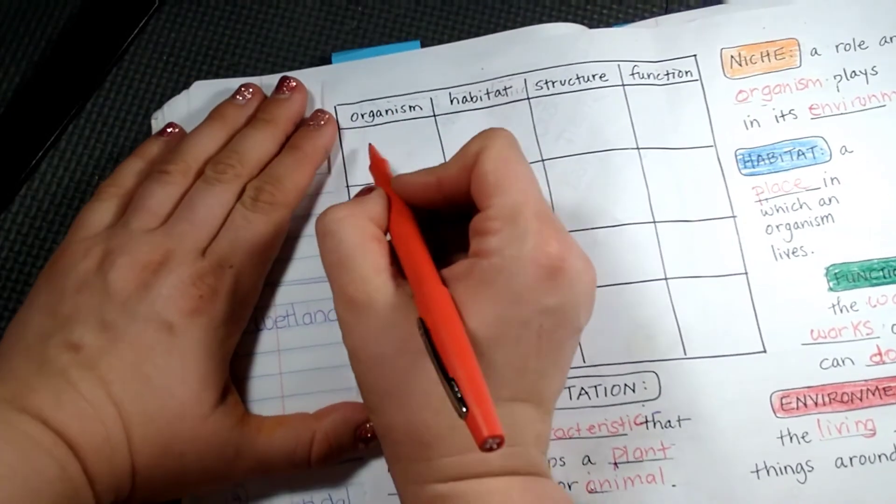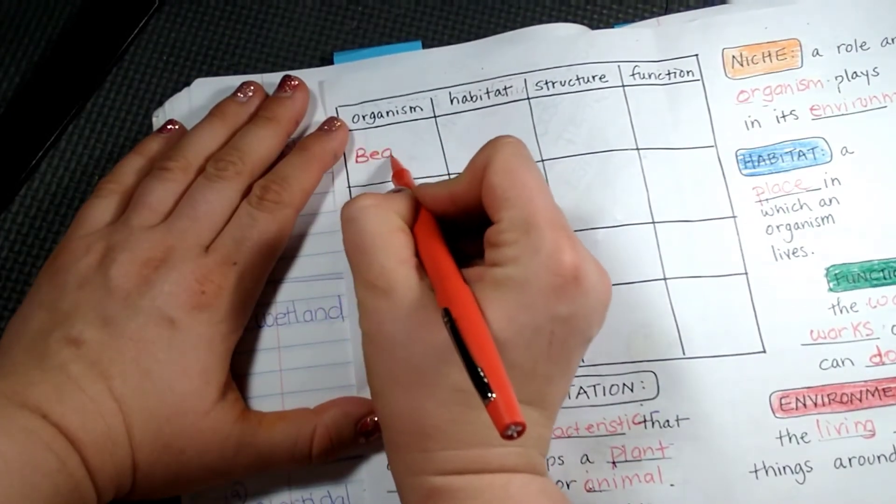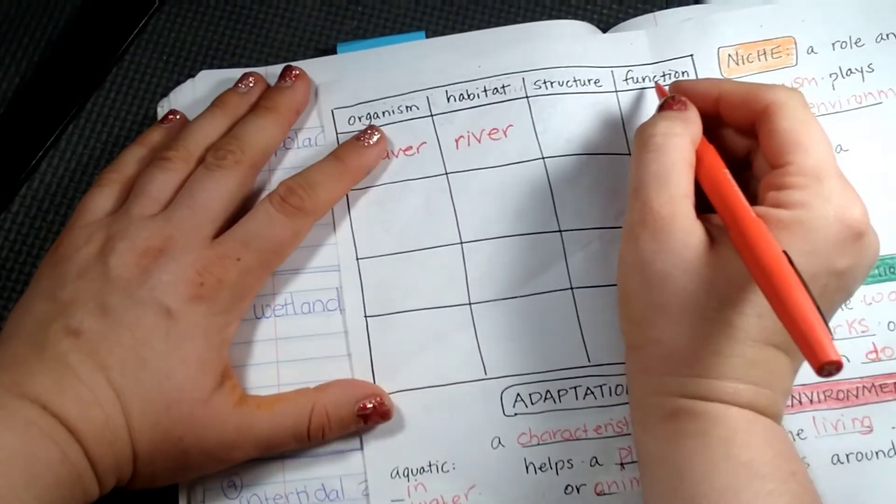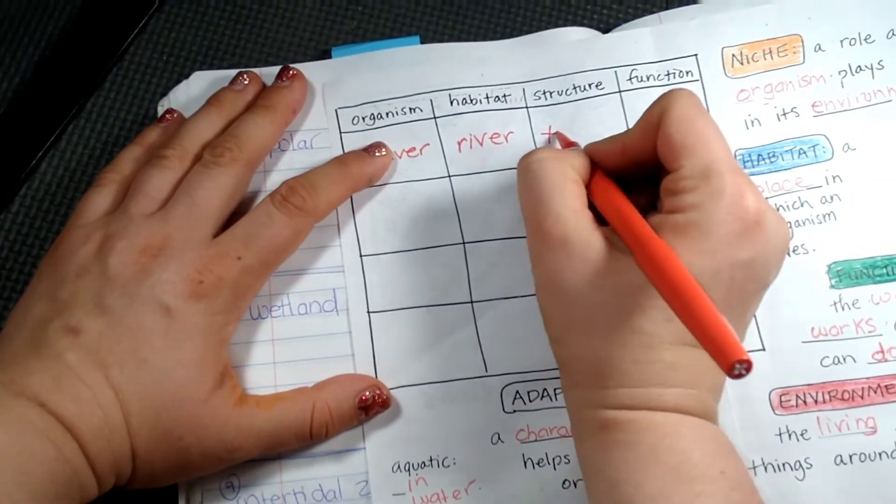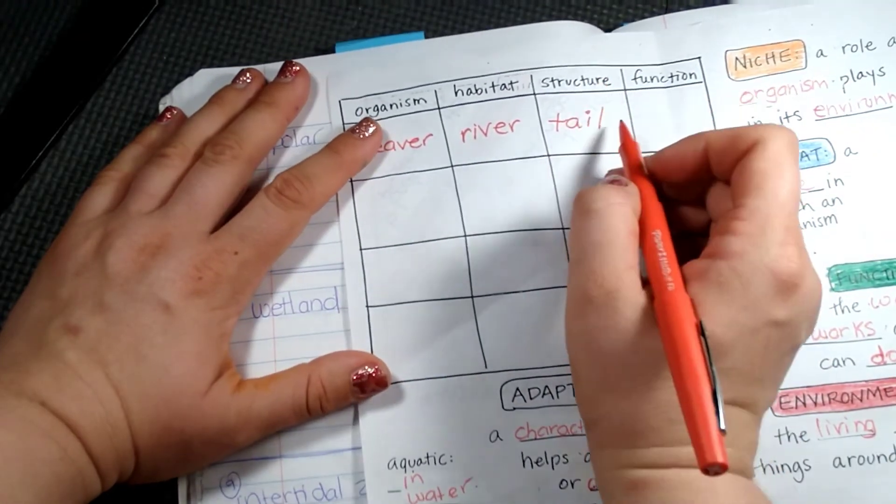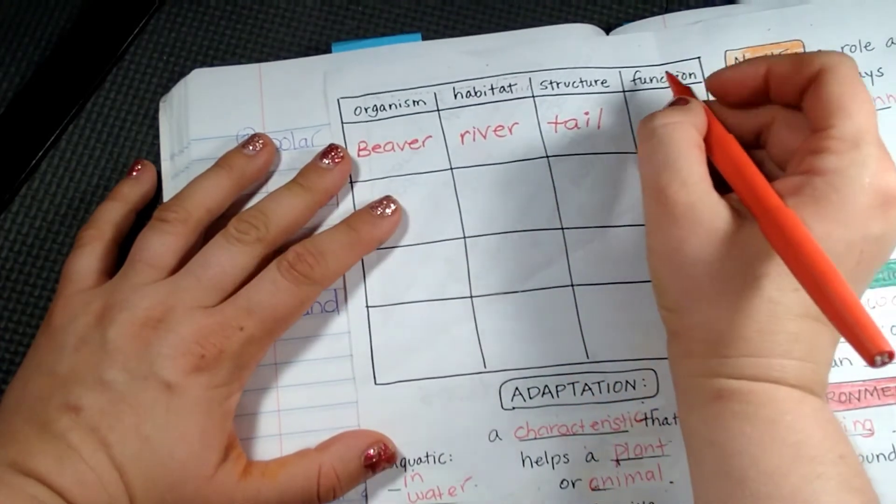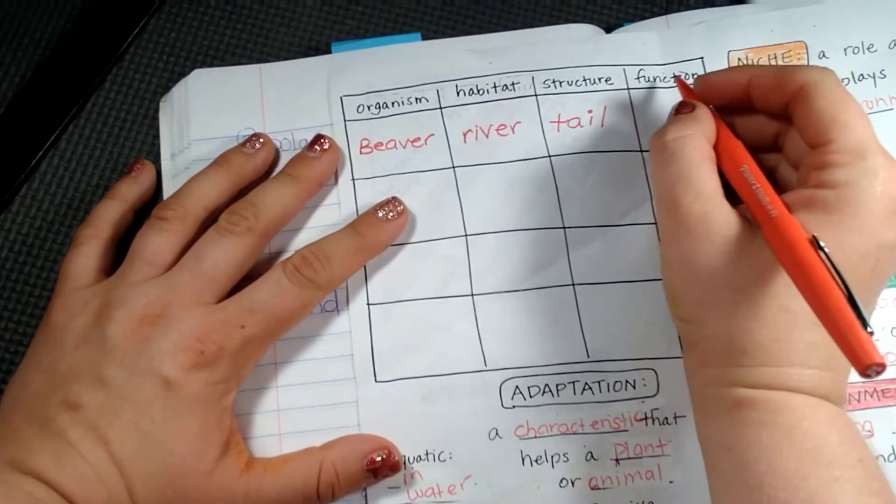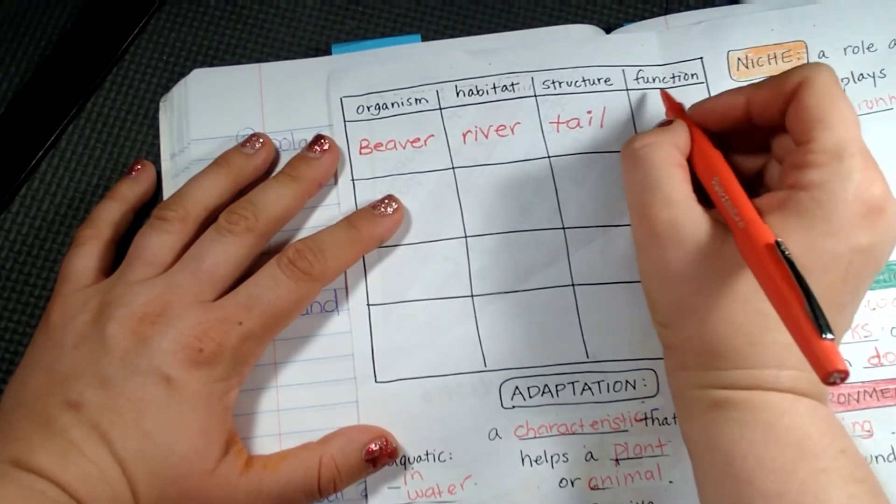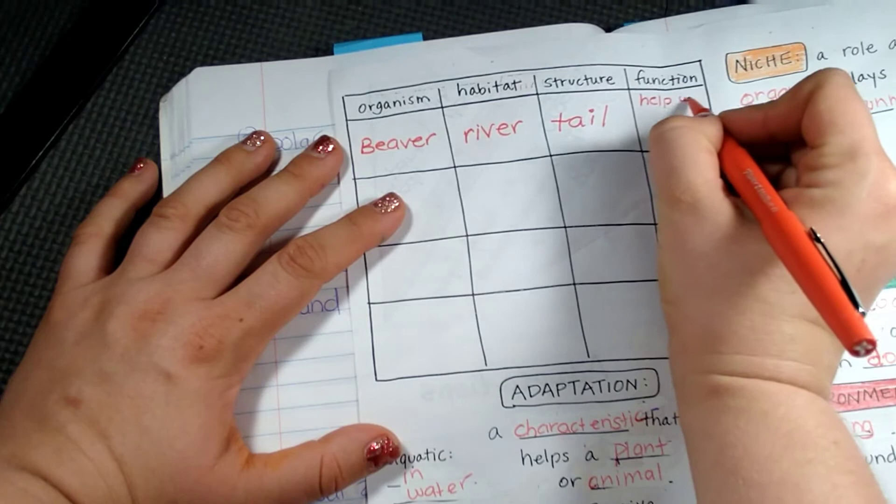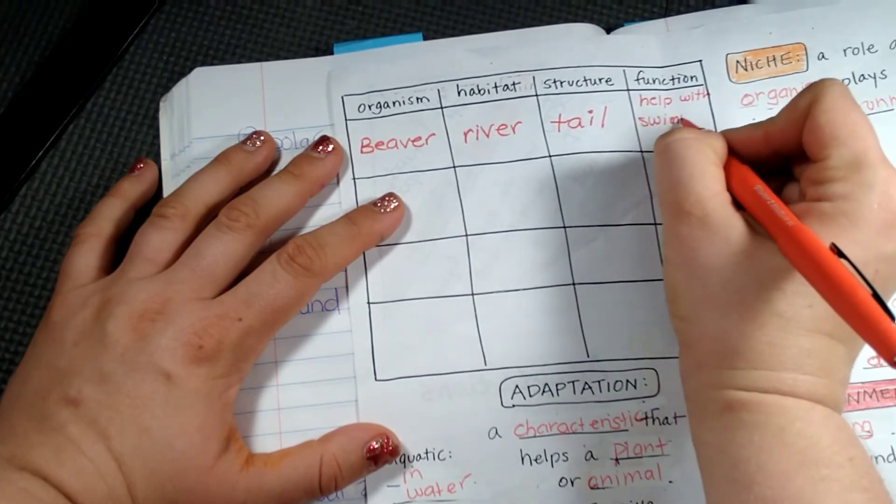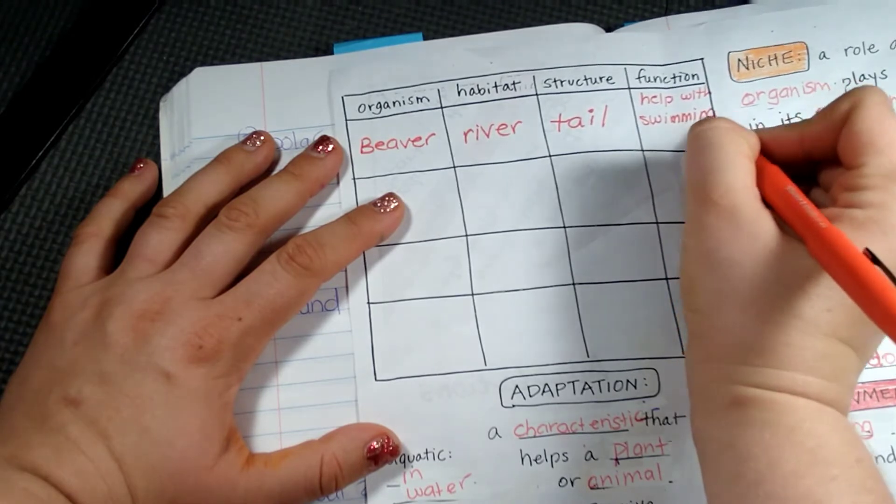Let's talk about the beaver. The beaver lives in a river habitat. It has a tail that is a structure. Now what does a tail do? One of the functions of a beaver's tail is to help with swimming. It's kind of like a rudder to help it swim.